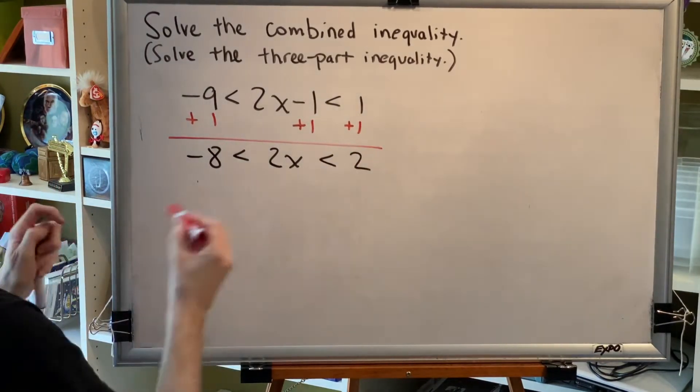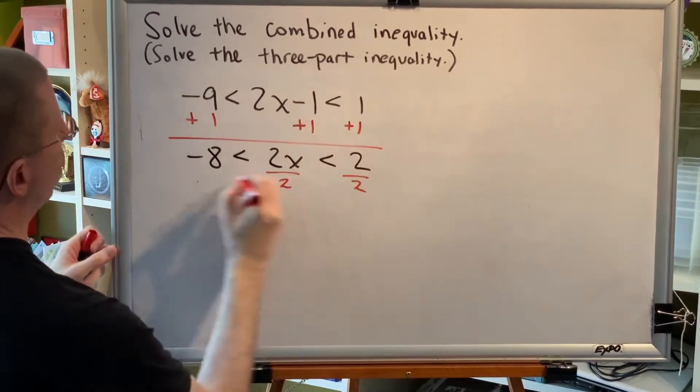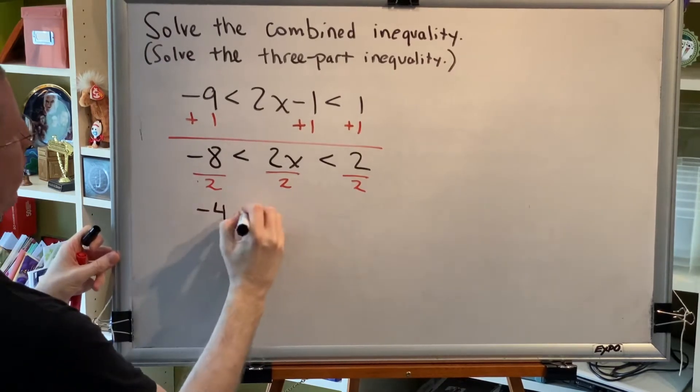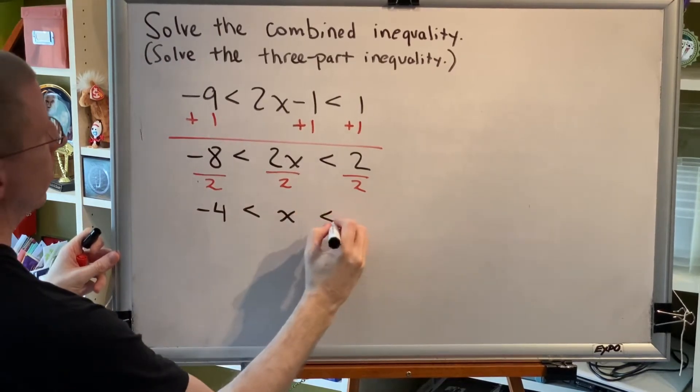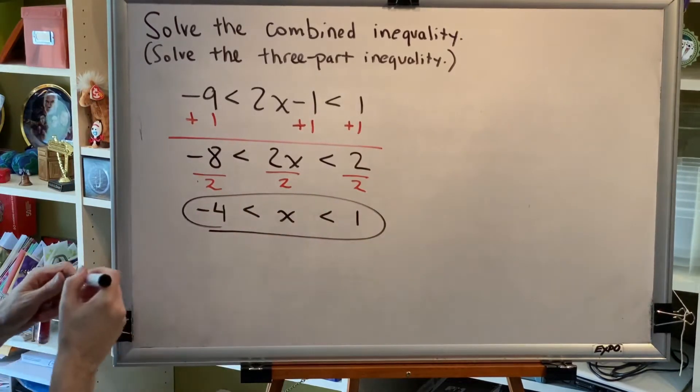Next, get rid of the 2 which is multiplying by dividing. Divide by 2 in all three zones. Then we get negative 4 is less than x is less than 1. This is our final answer.